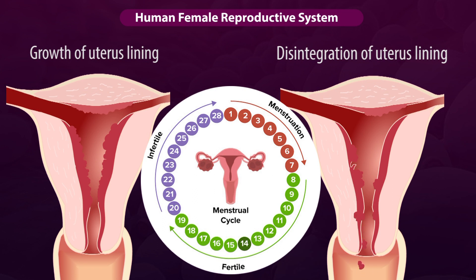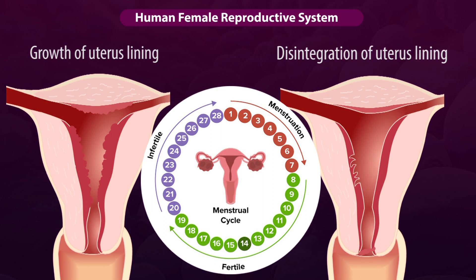Since this process is periodical and happens every 28 days, it is called the menstrual cycle or periods. This is all about the female reproductive system.